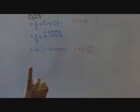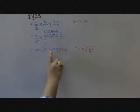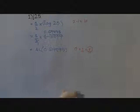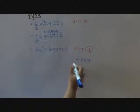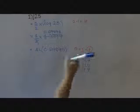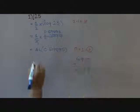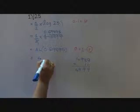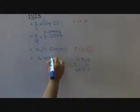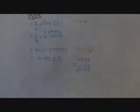For the antilog calculation, we look at row 69, column 8, and mean difference 9, and we add them up. That gives 4989 plus 10. Placing the decimal after one digit, we get 4.999, which is very close to 5. So our square root of 25 is calculated, which is 5.